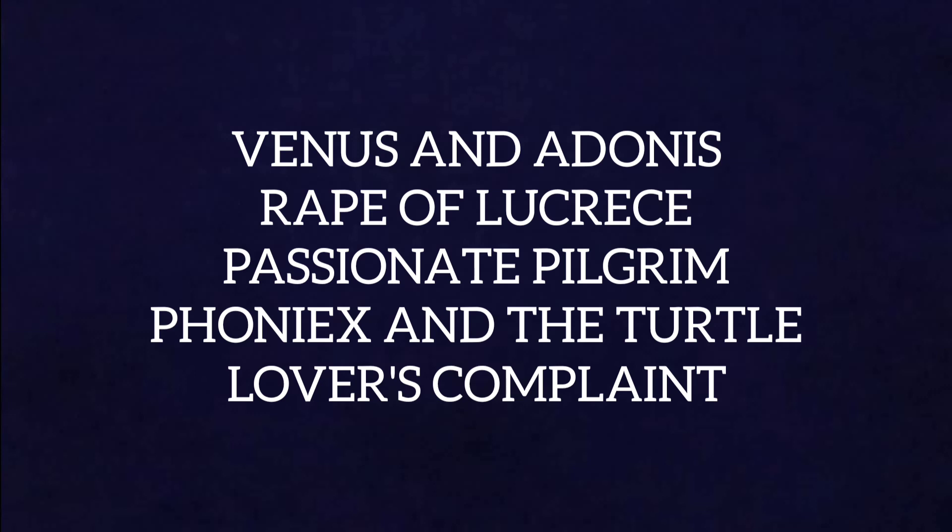The Rape of Lucrece is derived from Ovid's Fasti, Livy's History of Rome, and perhaps Chaucer's Legend of Good Women — three major sources. It describes the rape of a virtuous noblewoman, Lucrece, by the son of a king, Sextus Tarquinius. Lucrece is the wife of Tarquin's friend. When Lucrece's father and husband arrive, she tells them about the rape and asks for vengeance. After this, she stabs herself to death. At the end, the entire Tarquin family is rooted out, deposed and banished.